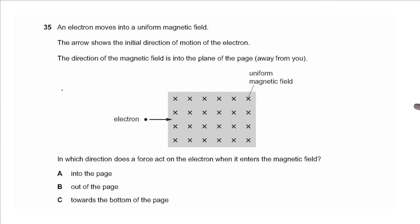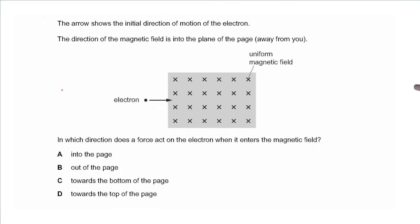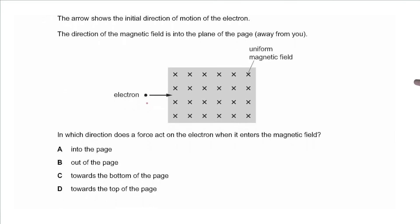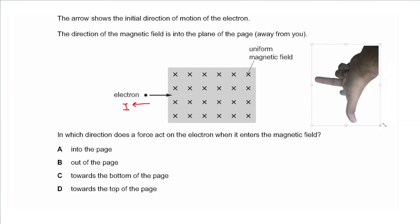Question 35 says an electron moves into a uniform magnetic field; the direction of the magnetic field is into the plane of the page. The conventional current is opposite in direction to the electron's motion because it is negatively charged. Using Fleming's left-hand rule: middle finger pointing left for current, index finger into the page for the field — the thumb points downwards. So the force acts towards the bottom of the page, and the answer is C.